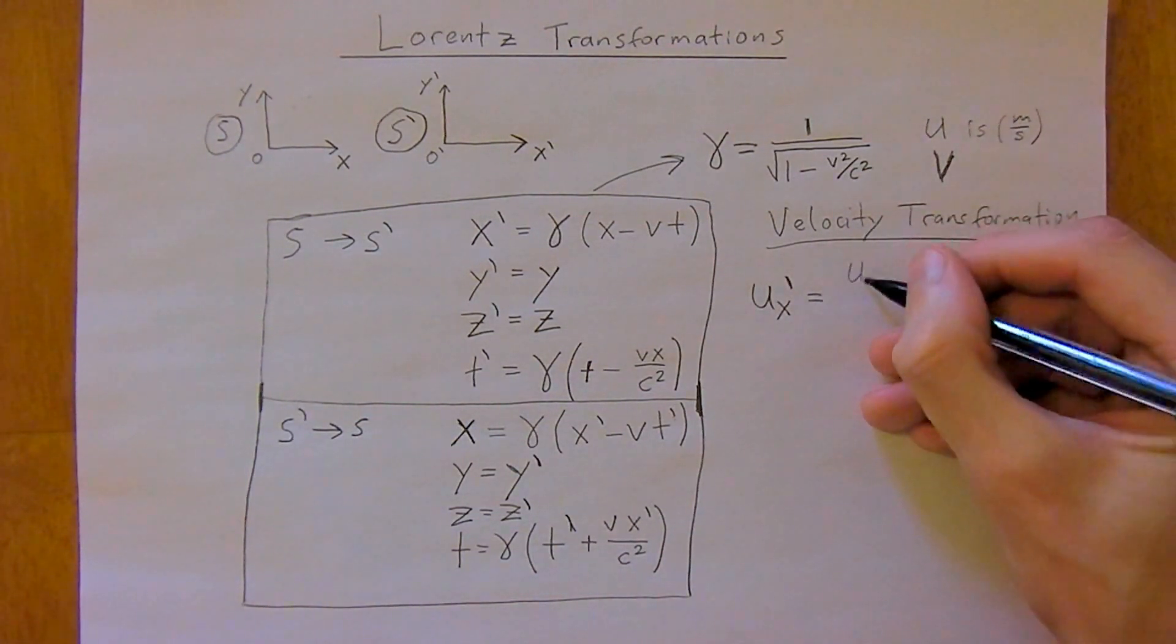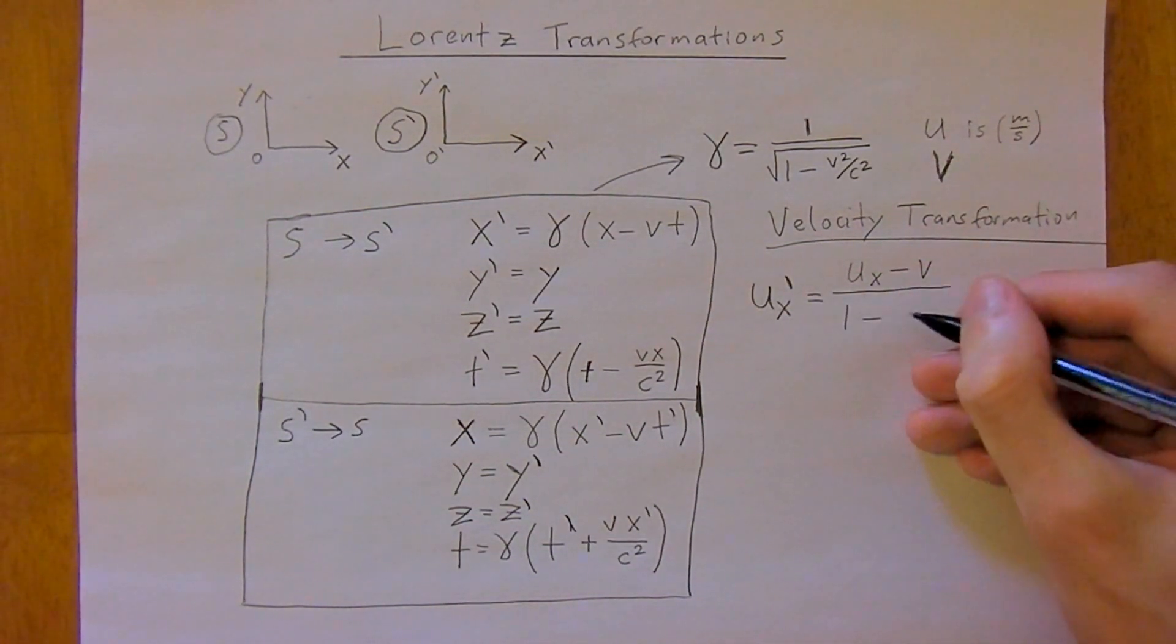U not in the X direction, and U is just the same as velocity. I've introduced a new symbol. U is still meters per second. You can think of U as just similar to V, it's just we're going to have multiple velocities going on. So velocity is equal to UX minus V divided by 1 minus UX V divided by C squared.